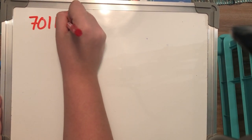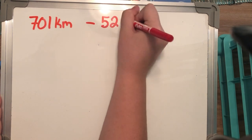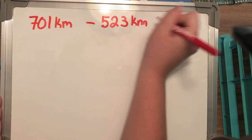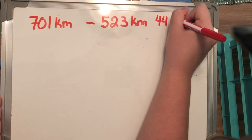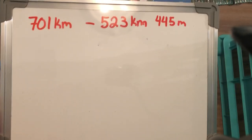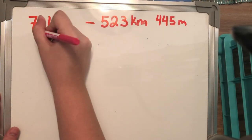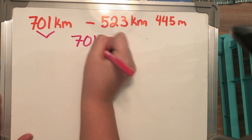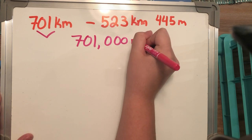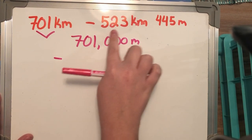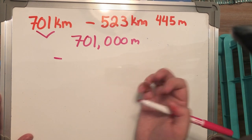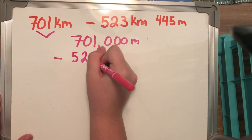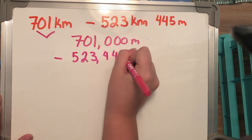There are two ways to solve comparing problems like this: make everything into one unit — all meters — or break it into smaller units. Now let's do some actual problems. I have 701KM minus 523KM 445M. Since 1 kilometer is worth 1,000 meters, I'm going to convert everything to meters: 701KM becomes 701,000 meters, minus 523KM 445M, which becomes 523,445M.